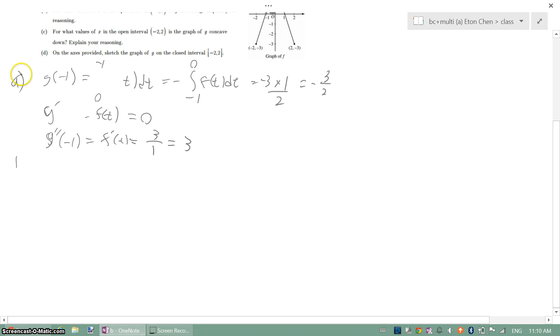That's part a, part b. For what values of x in the open interval is g increasing? So we find which part of g is increasing. How to do this? Oh yeah, it's not that hard. Just look at the graph.